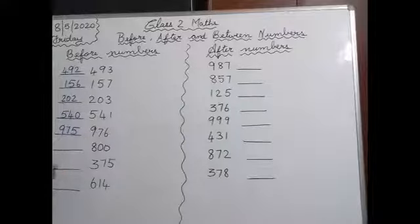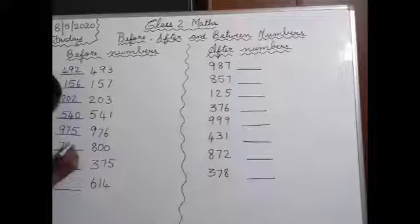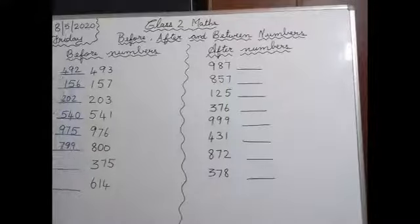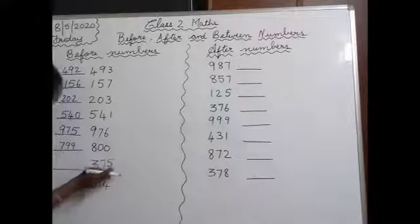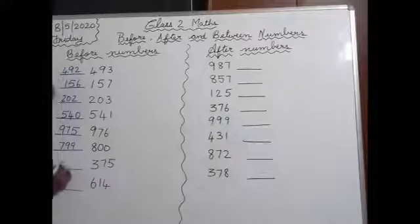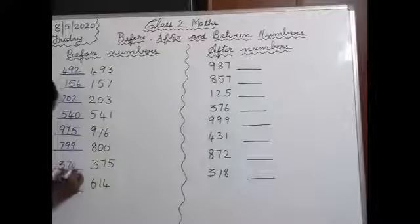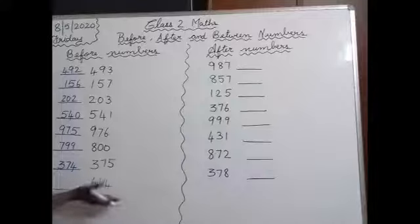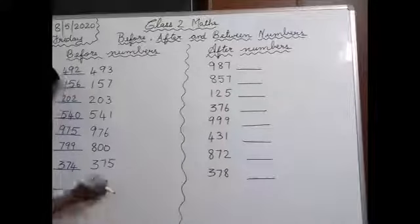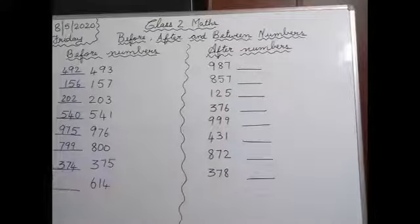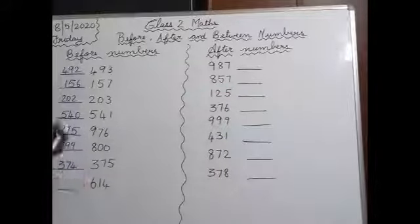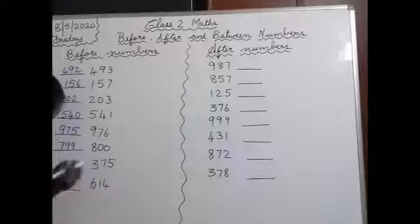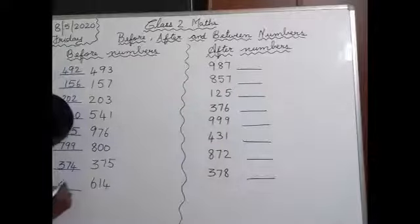Next, before 800: 799. Next, before 375, which number comes? 374. Now before 614 — start saying numbers from 610: 610, 611, 612, 613, 614. So before 614, which number comes? 613.